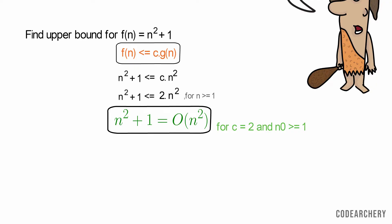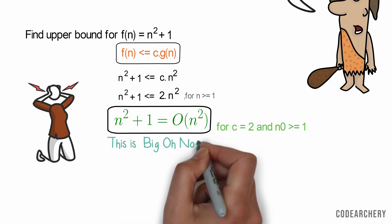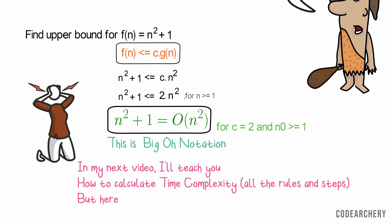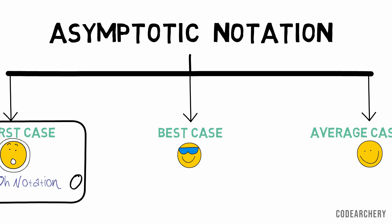I know guys that you are still confused about how we calculate the time complexity, but in this video we only focus on notations. In my next video, I'll teach you how to calculate time complexity, all the rules and steps. But here we are only focusing on notations. Now let's see the best case scenario. If you understood Big O notation, then it's going to be easy.